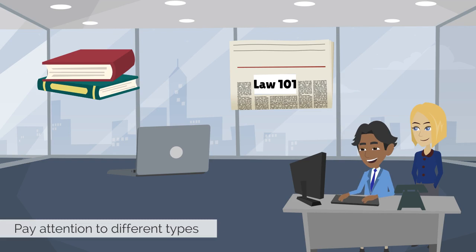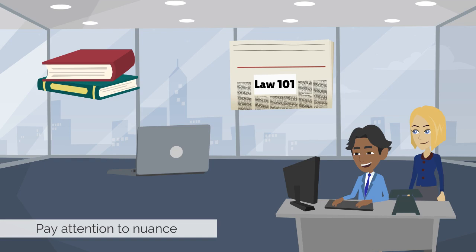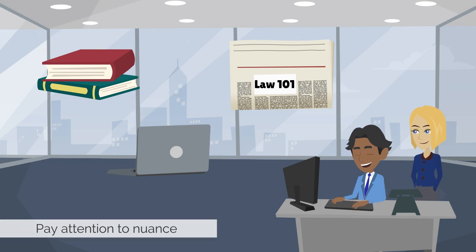Other nuances between citation forms let you identify the nature of the document being cited. Familiarize yourself with the different types of legal material and their respective citation forms. Keep in mind that while the form of the citation indicates what kind of source is being cited, the content indicates where that source can be located. Depending on the type of source, the required content may vary.